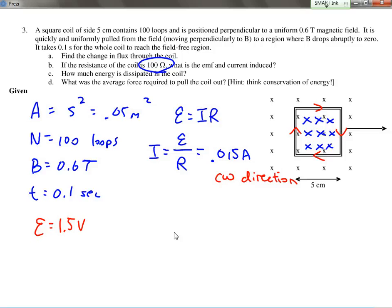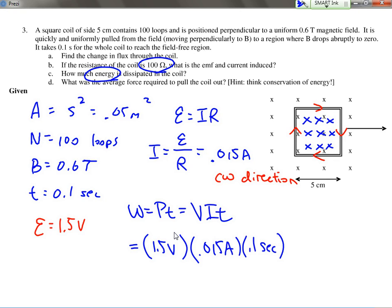If we're solving for the energy dissipated, there are a couple of different ways we could do this. But the easiest way would just be power times time. The power, of course, from electricity is V times I times T, so that equals to 1.5 volts times 0.015 amps times 0.1 seconds, which equals to 0.00225 joules.